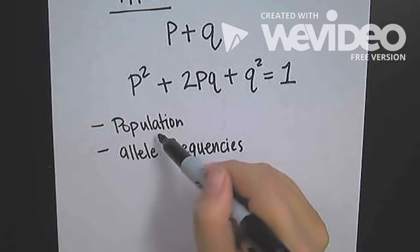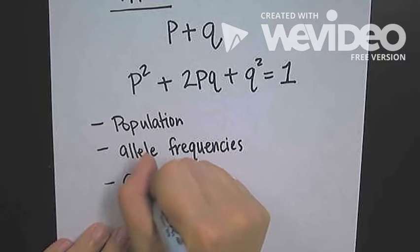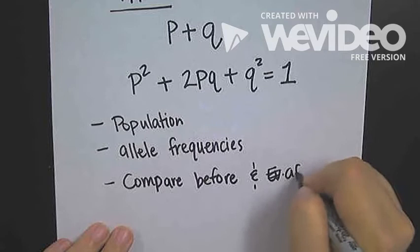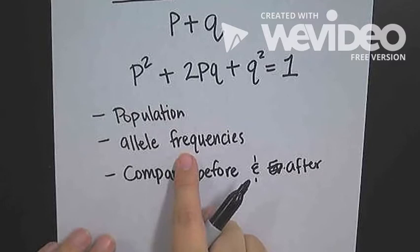What we want to do is compare before and after either an amount of time or a certain event, because we want to see if these allele frequencies change.